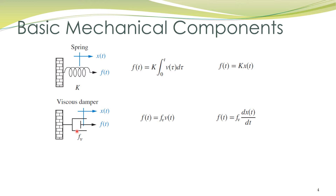The second basic component in mechanical systems is a viscous damper, shown by this symbol. One end of the damper is fixed and the other end has displacement x(t) when force f(t) is applied on it. The damper coefficient is denoted by fv and is a property of the damper itself. In a viscous damper, velocity is proportional to the applied force: f(t) = fv × v(t). This can be rewritten as f(t) equals the damper coefficient fv multiplied by the derivative of displacement.